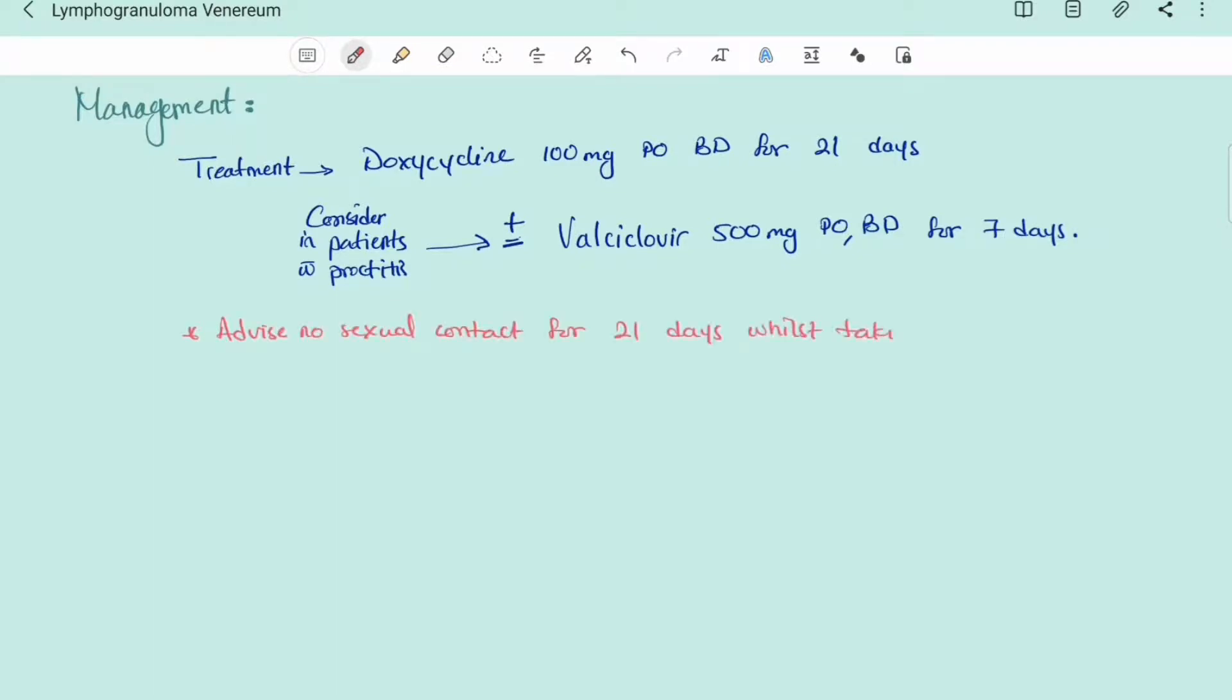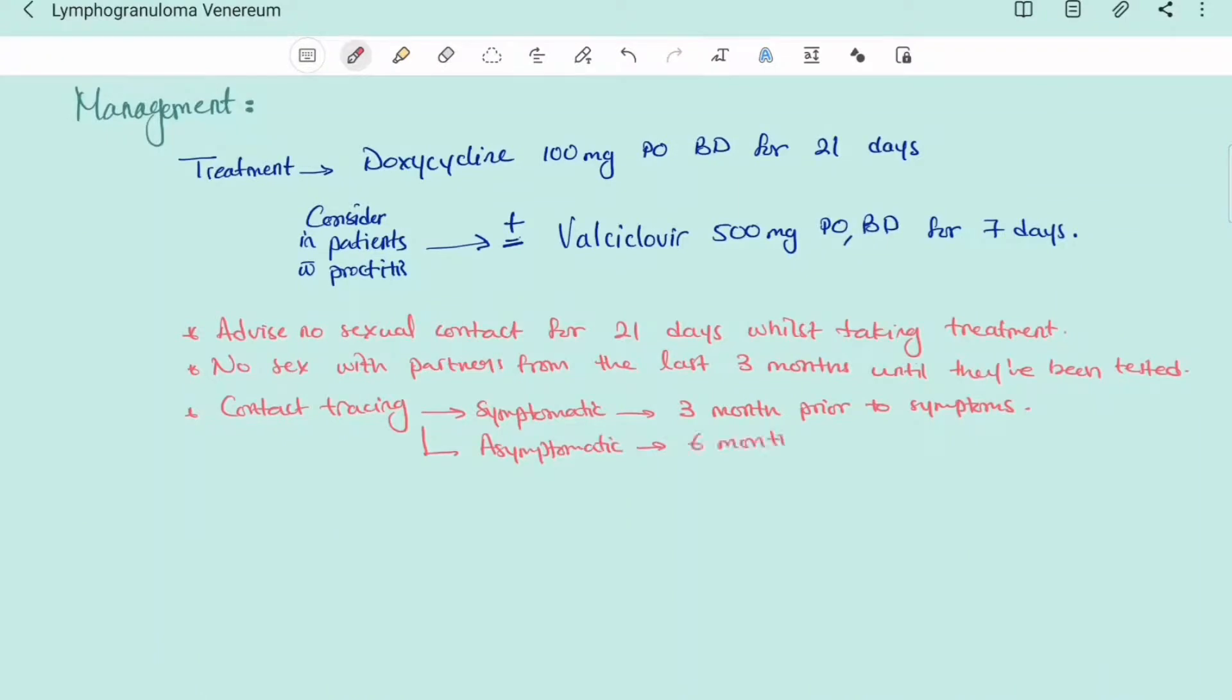We should also advise no sexual contact for 21 days whilst taking treatment, and advise no sex with partners from the last 3 months until the partners have been tested and treated if necessary. Contact tracing should be done back to 3 months if the patient is symptomatic and 6 months if the patient is asymptomatic. We should also provide the patient with a fact sheet, and this disease is not notifiable.